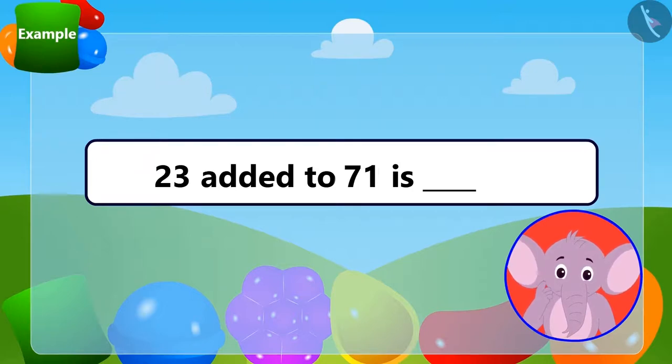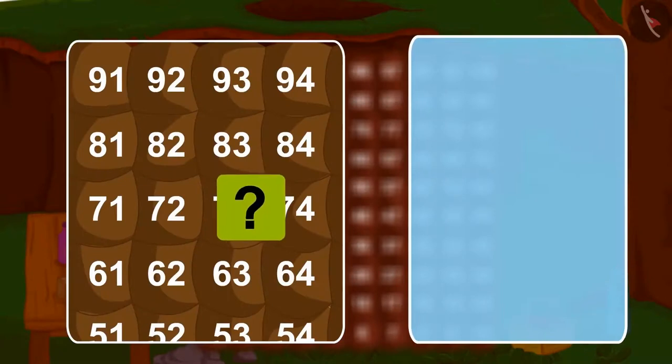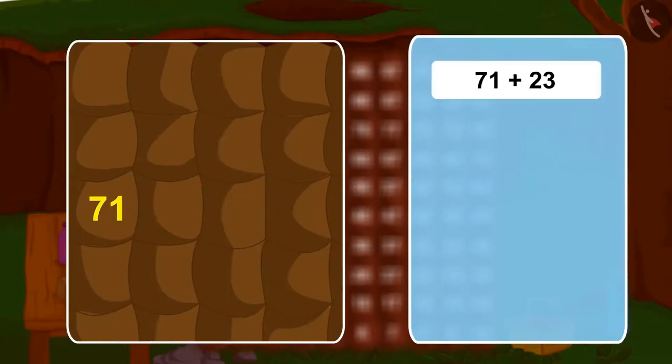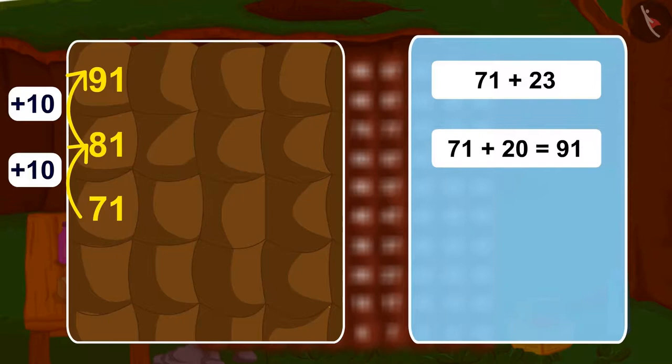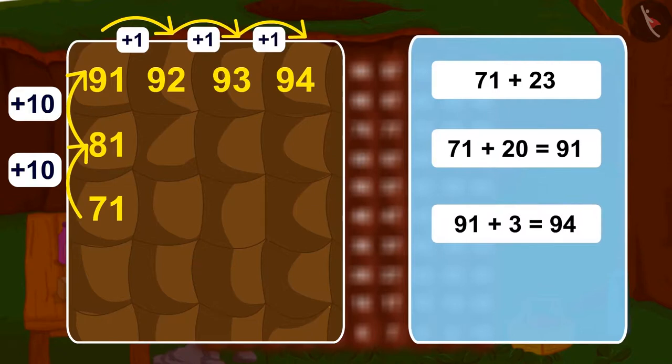How many jumps will he have to take this time? Oh yes, we will first take two long jumps and reach 20 steps ahead to reach 91. And then, absolutely right. Three steps further ahead and 23 steps more than 71. We will reach 94. In this way, adding 23 to 71 would give us 94.